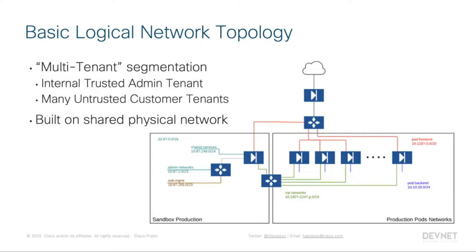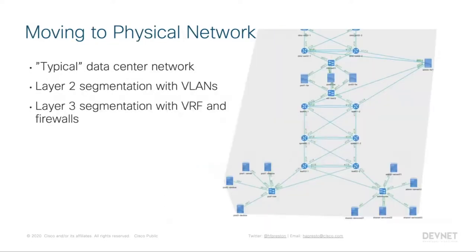The entire environment is built on a single shared physical network platform. From a logical perspective it's not all that complicated — just a few different network segmentation layers. The complexity comes when we map that logical environment into the physical world. We're a typical data center network, still fairly old school, using layer two segmentation with VLANs, and layer three segmentation done with VRFs and firewalls to keep things segmented.